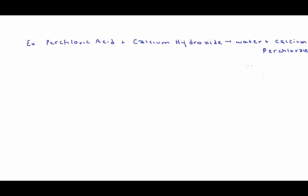The first thing I need to do is write the molecular equation for this acid-base reaction. Perchloric acid — remember the formula for perchlorate is ClO4 with a negative one charge — so perchloric acid is HClO4. It reacts with calcium hydroxide, Ca(OH)2, to produce water, H2O, and calcium perchlorate. Calcium has a two-plus charge and perchlorate is negative one, so it would be Ca(ClO4)2.